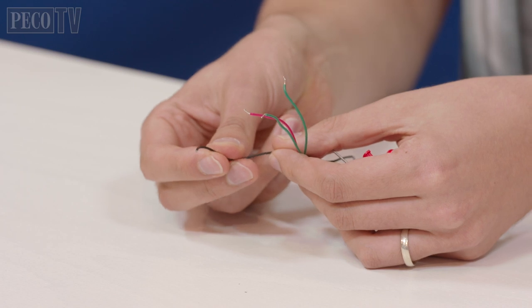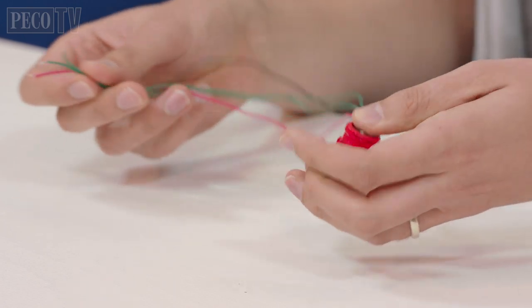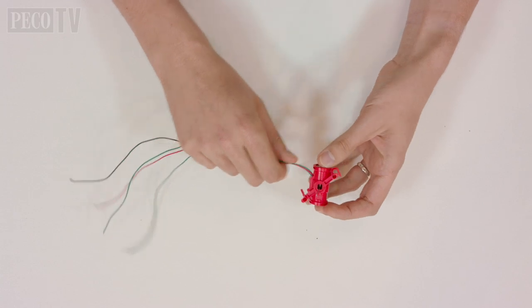The motor is supplied pre-wired and the red and black wires are your power supply and the green wires are your common returns.